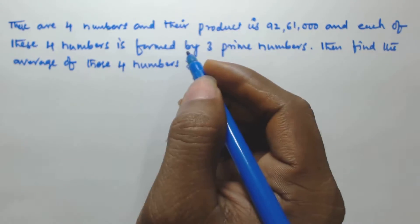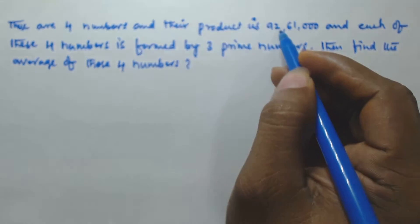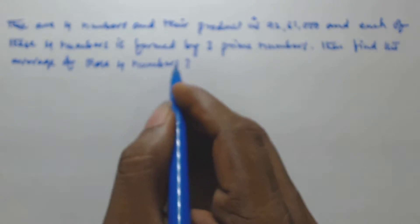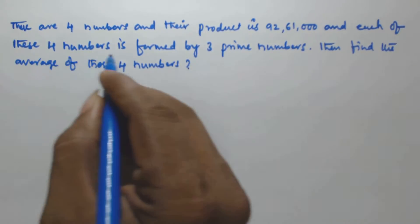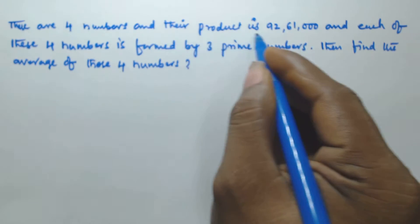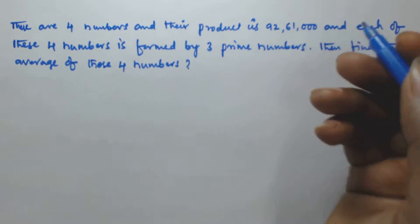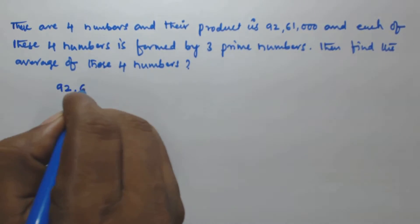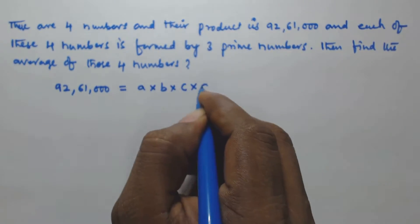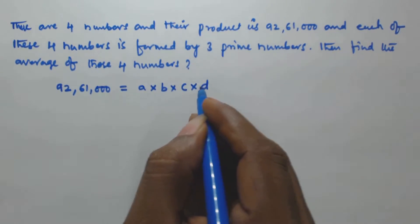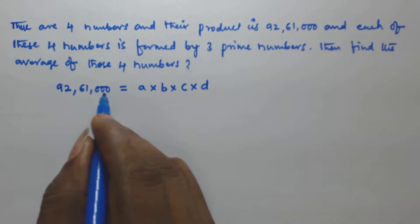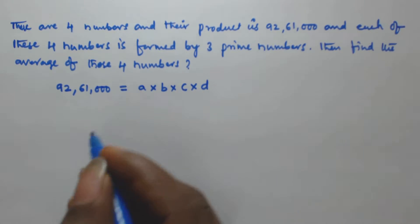So there are four numbers and their product is 92,61,000, and each of these four numbers is formed by three prime numbers. We have to find the average of those four numbers. That means 92,61,000 is going to be in the form of a × b × c × d, where a, b, c, and d are each formed by three prime numbers. So we need to find the prime factors of 92,61,000.